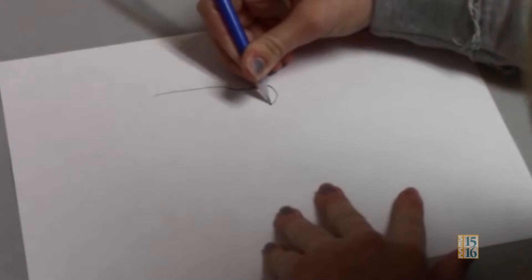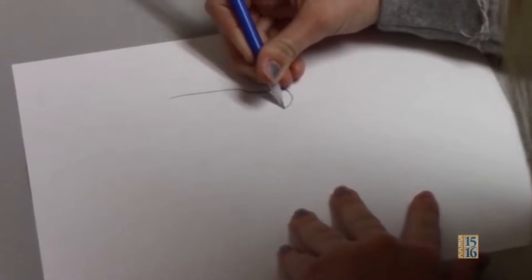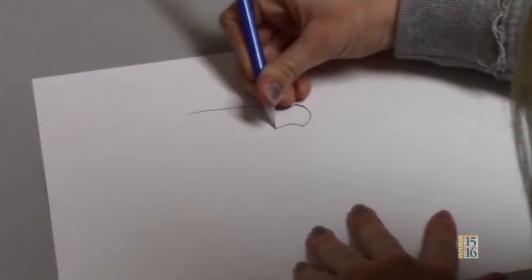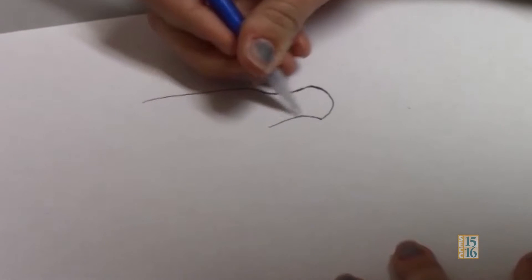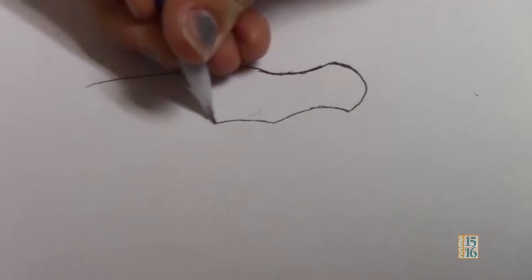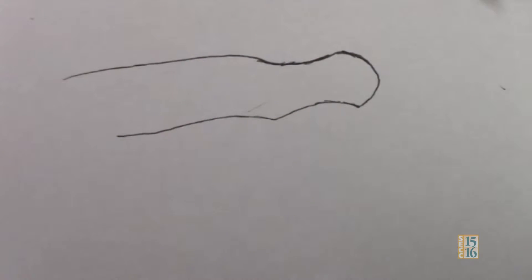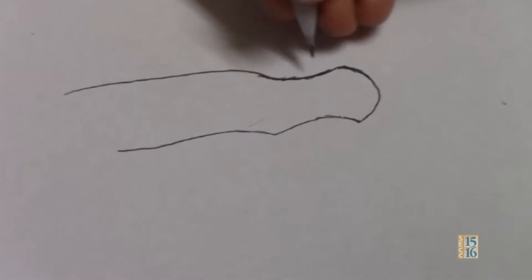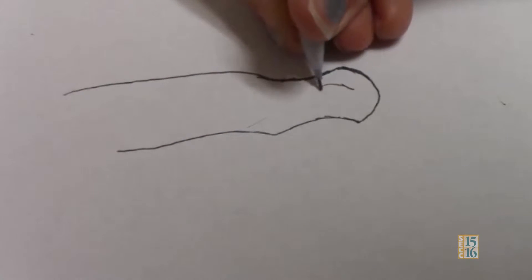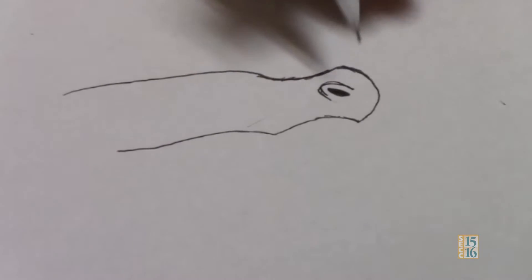And then go up at the end of the nose and go back down. Then curve and make a bump and go all the way to the back of the head because they have long mouths. And then do a little nose like a circle with a little oval inside so it looks like a nose.